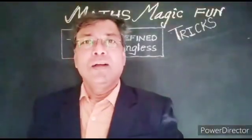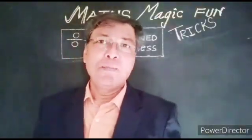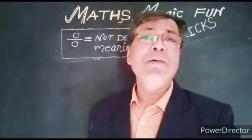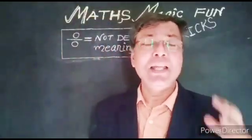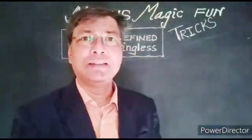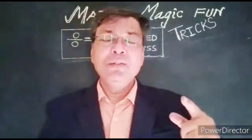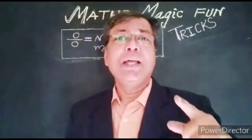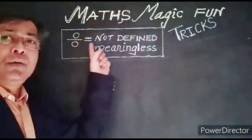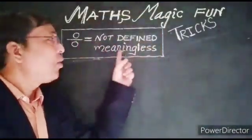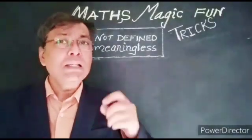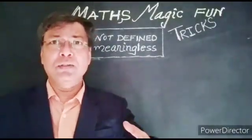Though I have proved 0 upon 0 is equal to 2 or 0 upon 0 is equal to half, it is scientifically and according to mathematics not correct. According to mathematics rules and science, 0 upon 0 is not definable or meaningless. Now I am going to show you with scientific proof.